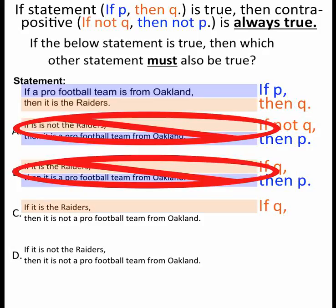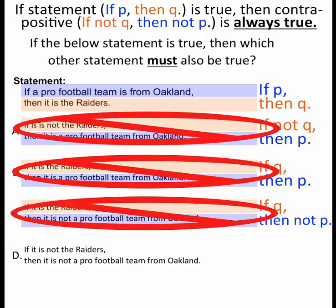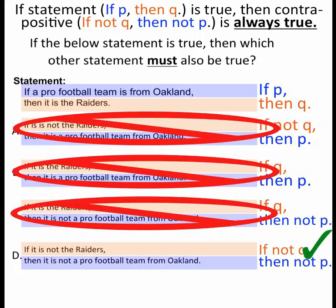If it is the Raiders — if Q — then not P. Again, not the contrapositive. But if it is not the Raiders — if not Q — then it is not a pro football team from Oakland — then not P. That is true because that is the contrapositive, so the answer is D.